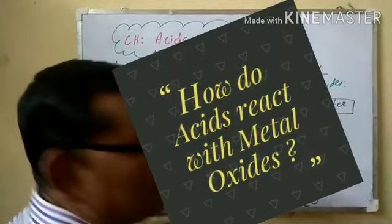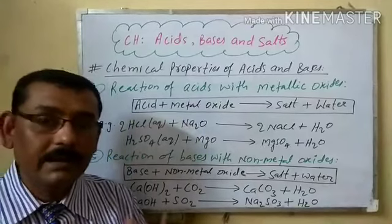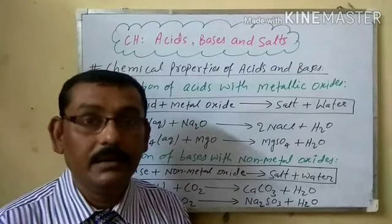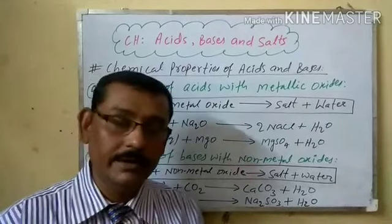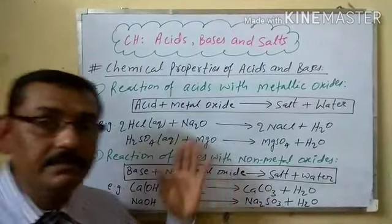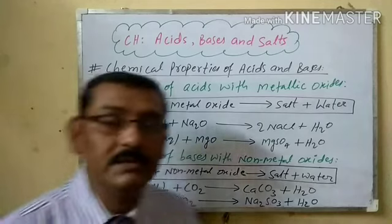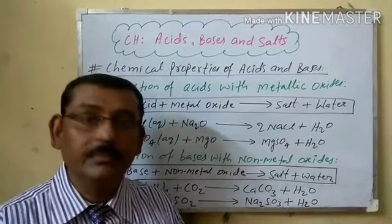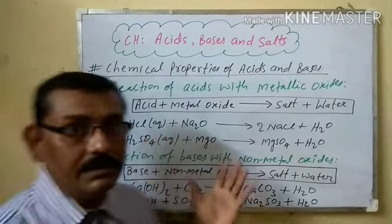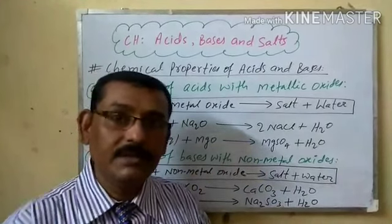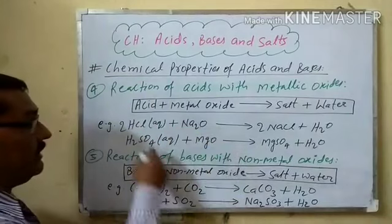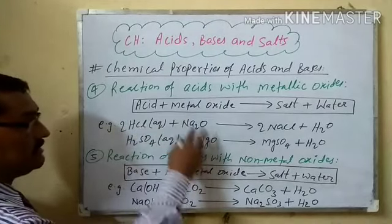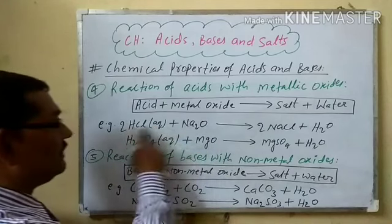Now, how do acids react with metallic oxides? Metallic oxides are of basic nature — when dissolved in water, they form a base. So when acid reacts with a metal oxide in aqueous conditions, the metal oxide behaves like a base, and the reaction is similar to a neutralization reaction. The products are salt and water.